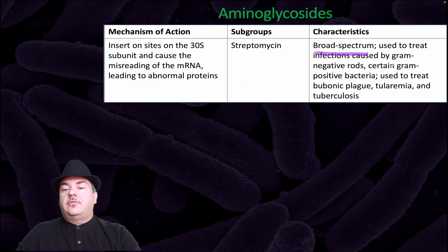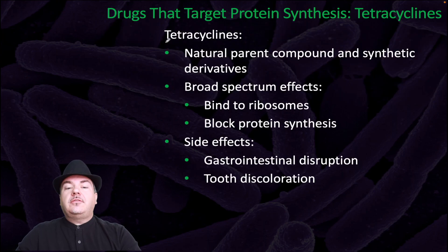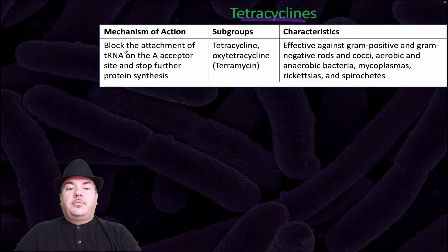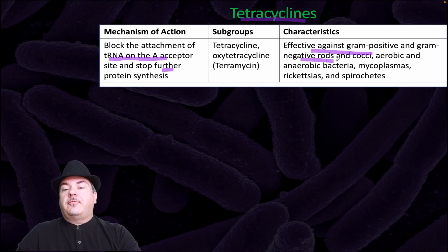Aminoglycosides are broad spectrum, used to treat infections caused by gram-negative rods, certain gram-positive bacteria, and are used to treat bubonic plague and tuberculosis. Tetracyclines are natural parent compounds and synthetic derivatives with broad spectrum effects. They bind to ribosomes and block protein synthesis. Side effects include gastrointestinal disruption and tooth discoloration. Tetracyclines block the attachment of tRNA on the A-acceptor site and stop further protein synthesis, and are effective against gram-positive and gram-negative rods and cocci, aerobic and anaerobic bacteria, mycoplasmas, and spirochetes.